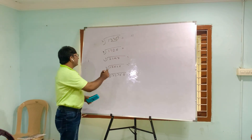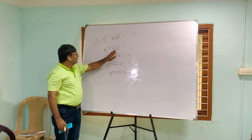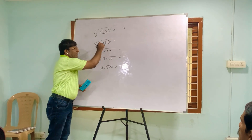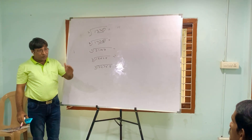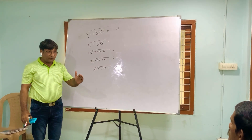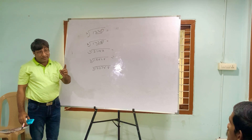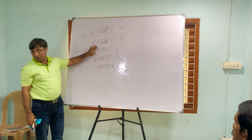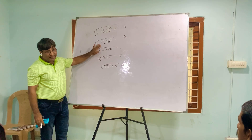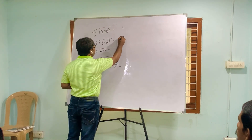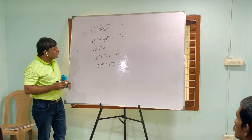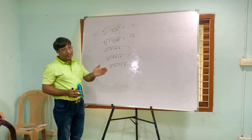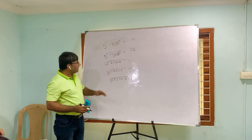This trick works for all numbers. For 1728, make a group of 3 digits: 728. The unit digit is 8. 8 × 8 × 8 = 512, so the unit digit is 2. Write 2. The left number is 1, and 1³ = 1, 2³ = 8 which is greater, so take 1. The answer is 12. Verify: 12 × 12 × 12 = 1728.